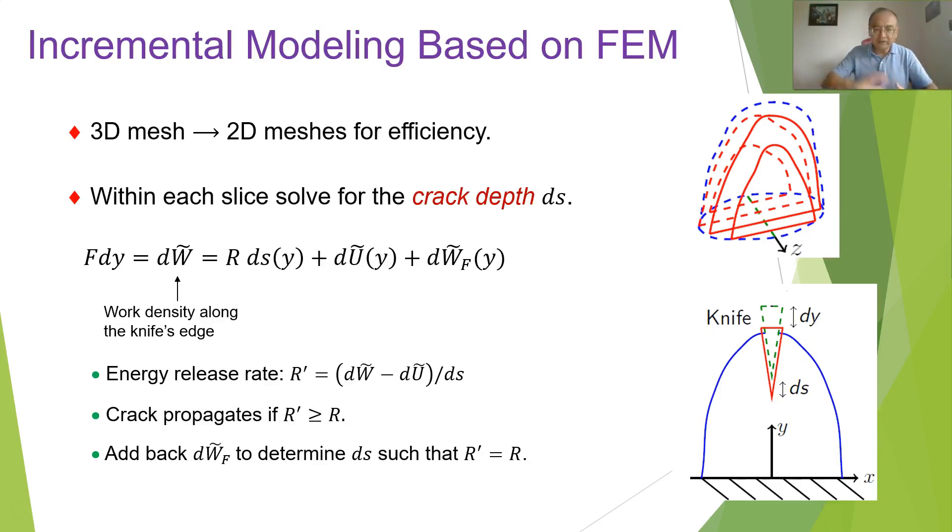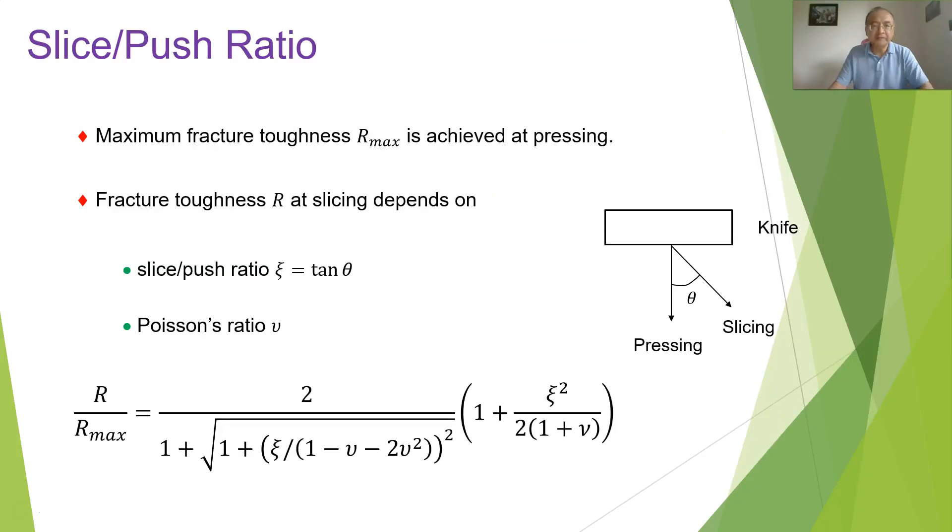So as a knife moves down as shown in this picture for distance of dy, the actual fracture along the direction ds is often less than dy because the object deforms a little bit. So we introduce this notion of energy release rate. We first ignore the work to overcome friction, look at the difference between the work done by the knife and then the strain energy and look at the difference and then divided by ds. That's going to give us the energy release rate. But as the knife cuts in it's not necessarily generates fracture. So we say that a crack happens when this energy release rate reaches the fracture toughness that measures the amount of work to generate unit area fracture. So once we determine fracture happens now we go back and consider the work that is needed to overcome friction to determine the exact crack depths.